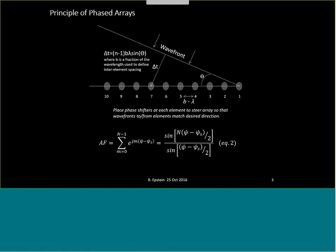As the term implies, a phased array is an array of elements. These elements can be receive elements, transmit elements, or both. In this slide, we have a linear array — a one-dimensional array. However, phased arrays can be two-dimensional, in a grid pattern, or even three-dimensional, as I will show later.